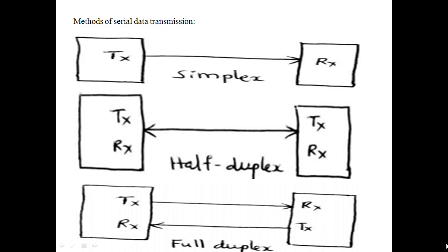The first method is simplex. In simplex, data is transmitted in one direction only — for example, from transmitter to receiver, or sensor to microcontroller, or microcontroller to an LED device.